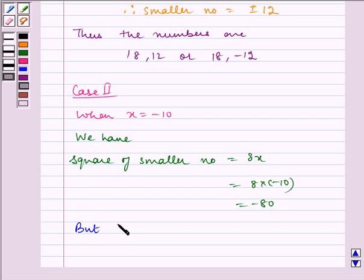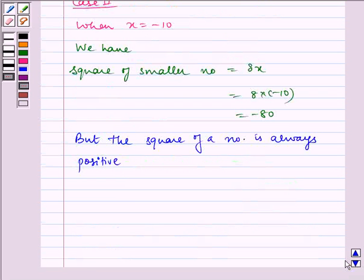But the square of a number is always positive. Therefore, x is equal to minus 10 is not possible.